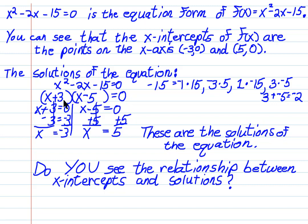(x + 3)(x - 5) = 0. We set each factor equal to zero and we come up with x = -3 and x = 5.